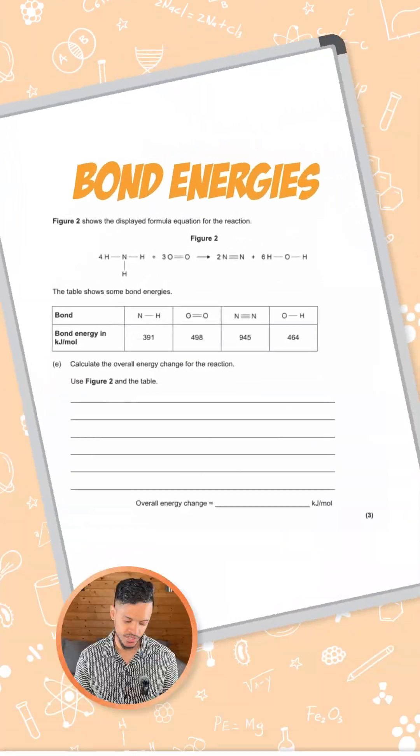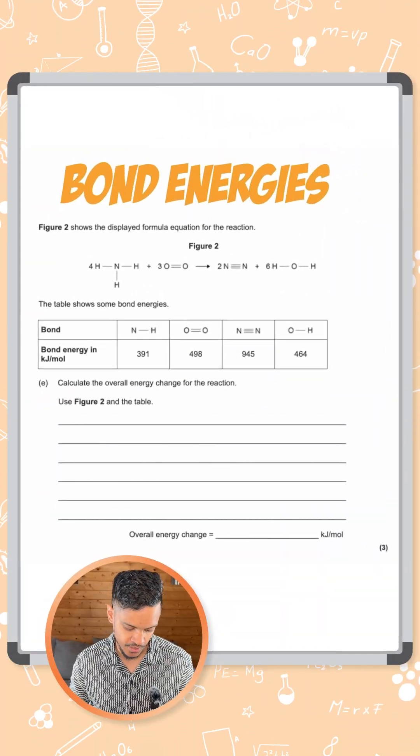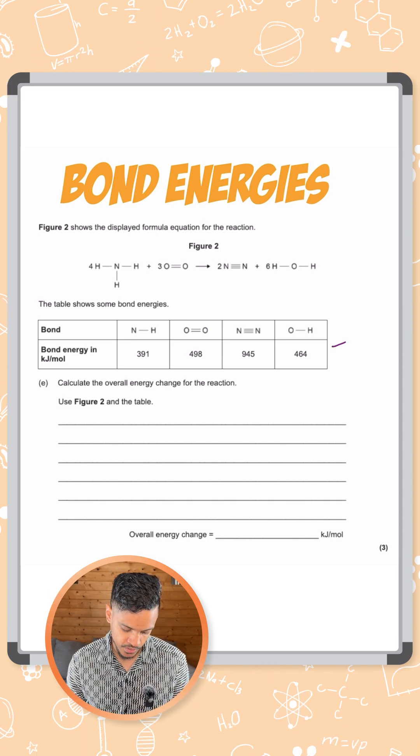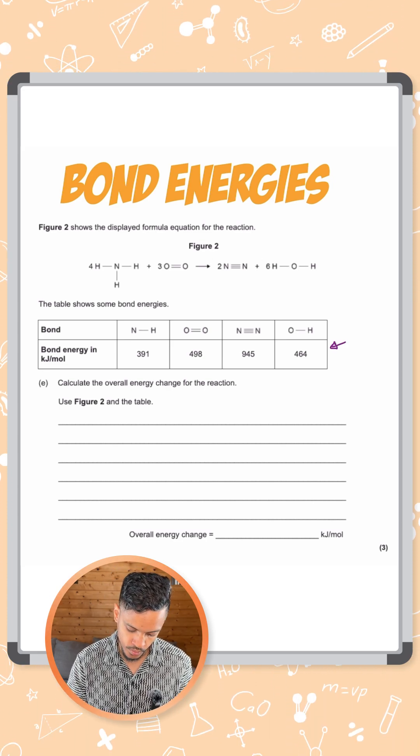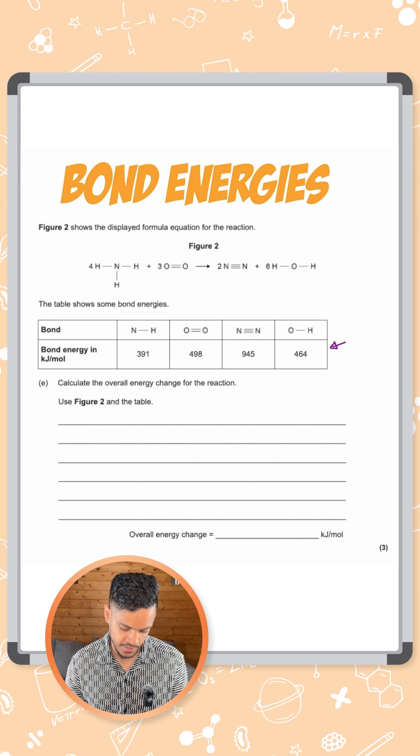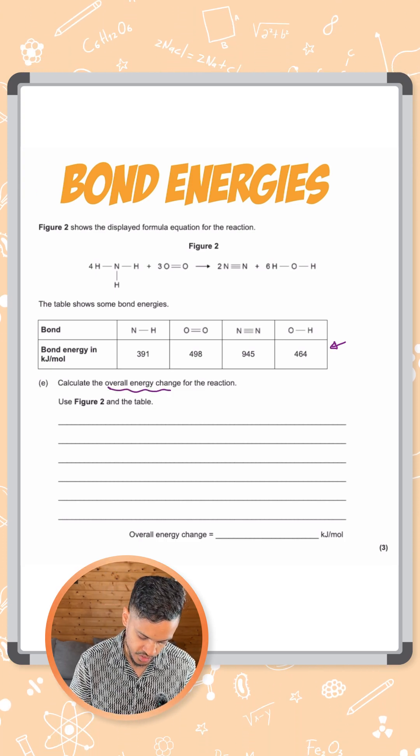Okay, let's try this question on bond energies. It's a calculation here. It says figure two shows a displayed formula equation for a reaction and we've got a table with all the bond energies for each type of bond given and it says to calculate the overall energy change.